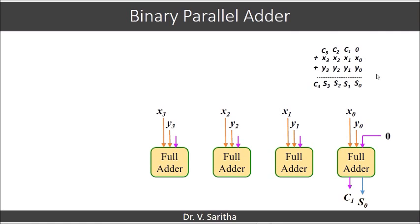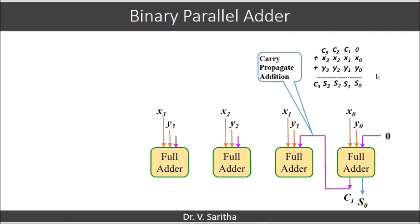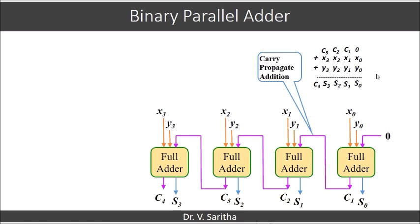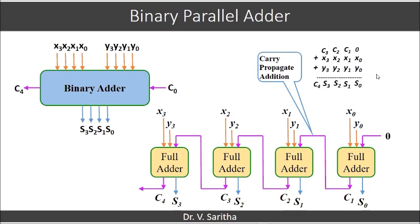The input carry is 0. We get C1 and S0 as outputs; C1 is propagated, then C2 and S1 are generated, then C3 and S2, and finally C4 and S3. When we represent this as a block diagram, we get the circuit shown here.